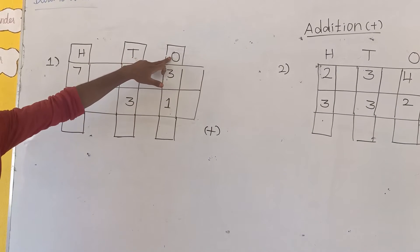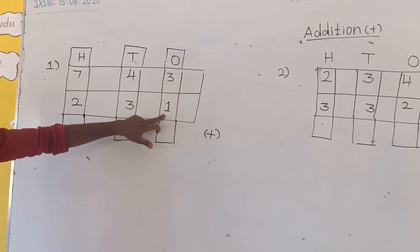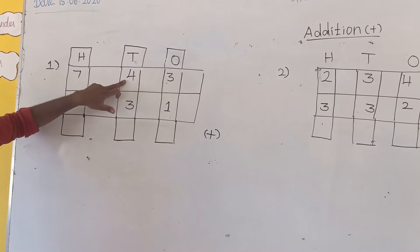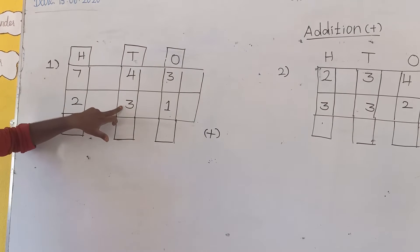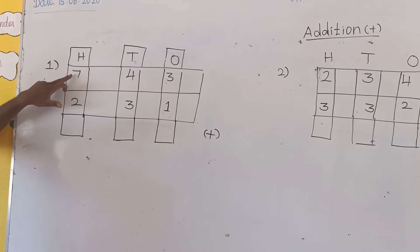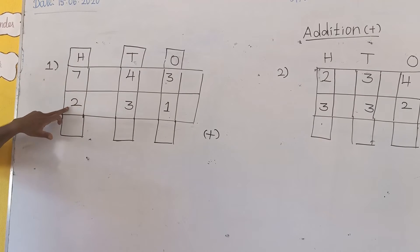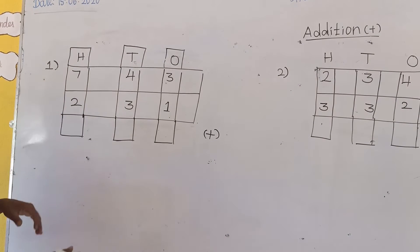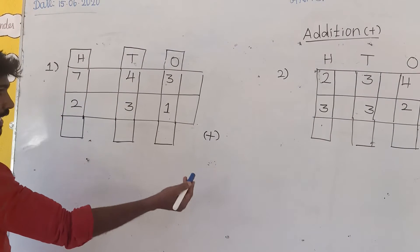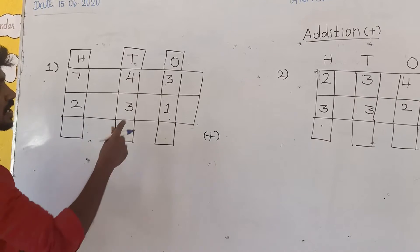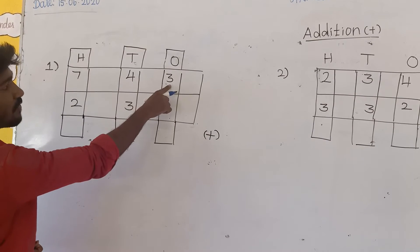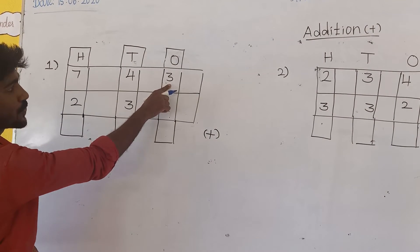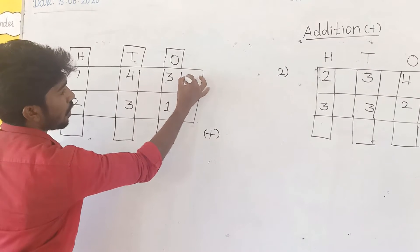First sum: 743 plus 231. Here, 1s value is 3 and 1; 10s value is 4 and 3; 100s value is 7 and 2. I will start from the right-hand side with the 1s value. First, 1s value is 3, so I will draw 3 lines.